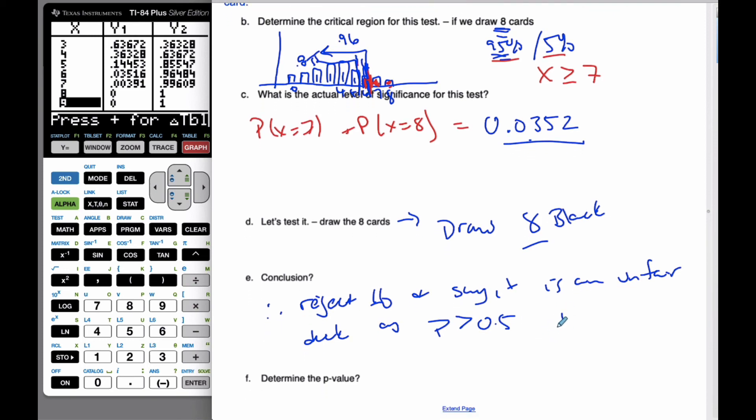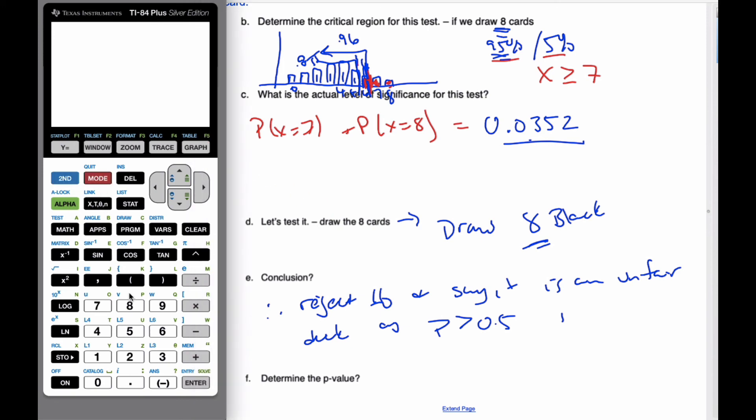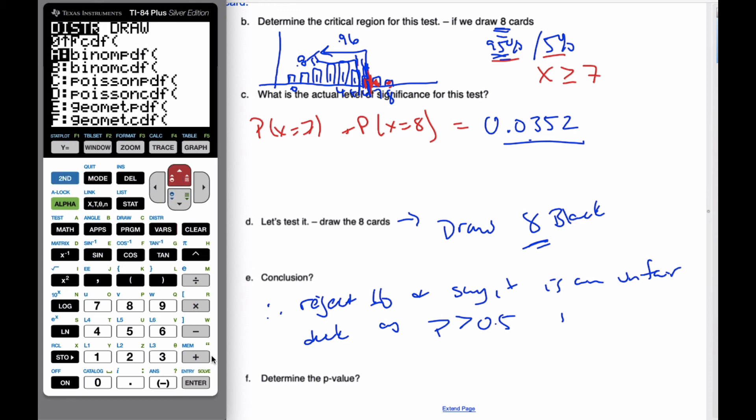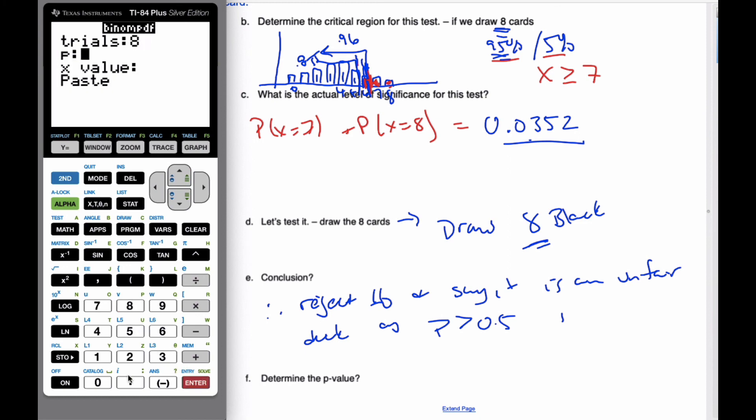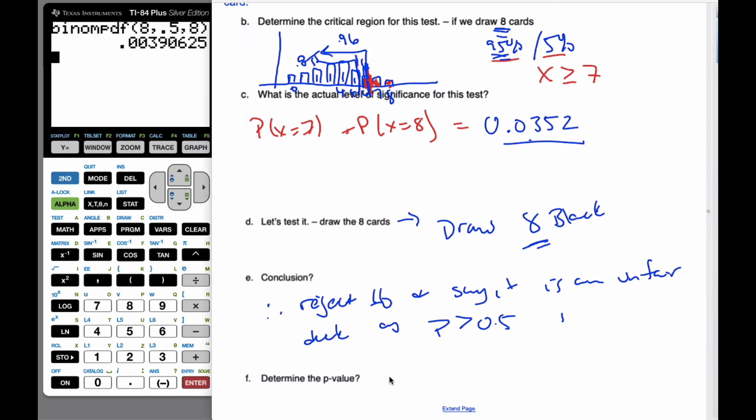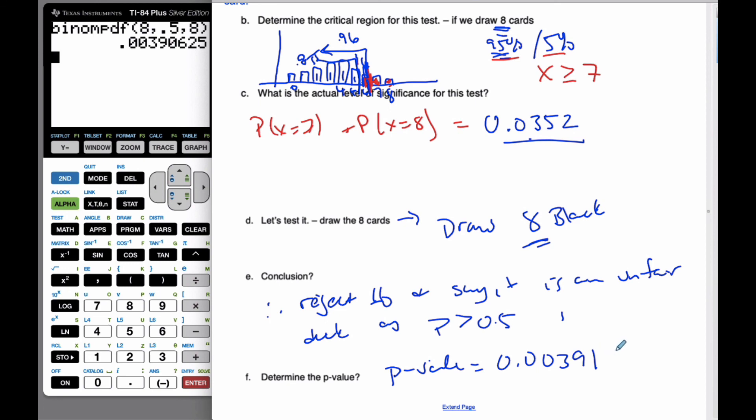And the p-value in this case, if I want to know the p-value, well, then I'm going to look for actual probability of exactly 8. And that's this value here, 0.0391. So if I do it, I can go here, distributions, I'm going to go binomialpdf. I have 8 trials, 0.5, and let's say it's 8 exactly. And so, my p-value is equal to 0.00391, which is smaller than alpha, and again, I'm rejecting the null hypothesis.